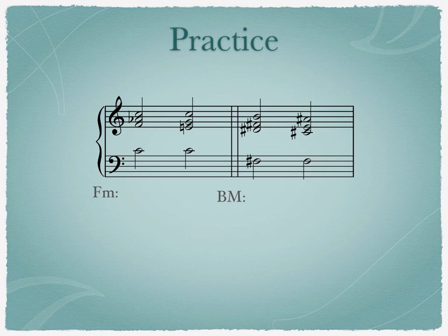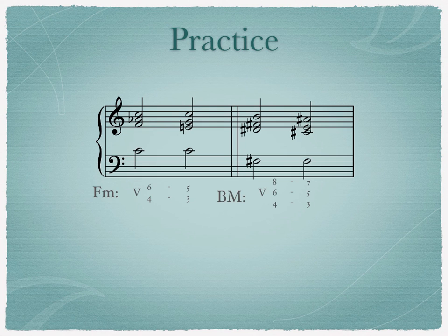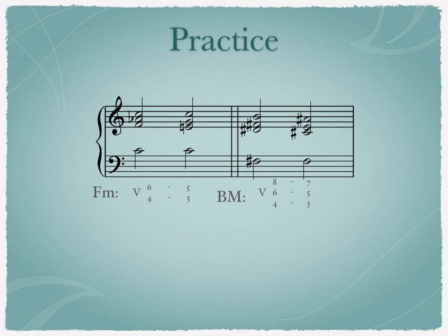In F minor, the 5-6-4 is spelled C-F-A♭-C and moves to 5-5-3 spelled C-E♮-G-C. In B major, the 5-6-4 is spelled F♯-D♯-F♯-B and moves to F♯-C♯-E-A♯. Make sure that all of your chords are spelled correctly and all of the voices are led correctly, especially the 4th, which must always resolve down by step.